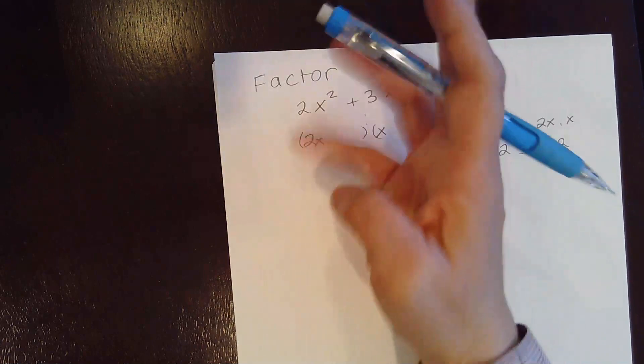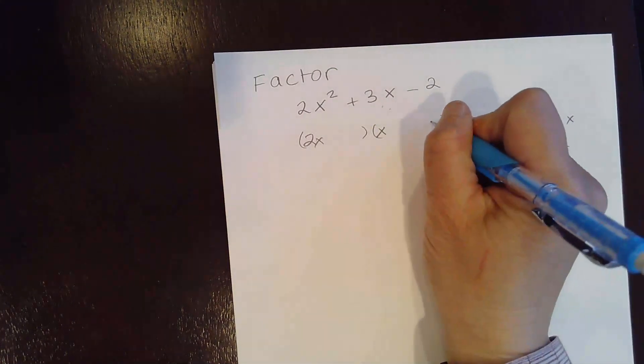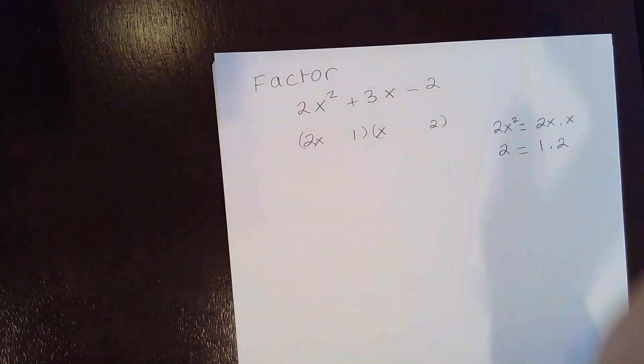So 2 cannot be here. You can try it. You'll see it won't work. 2 must be here and 1 must be here.